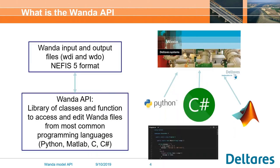What we have been doing is basically creating a Wanda API — an Application Programming Interface. That is a library of classes and functions which you can use to access and edit the Wanda files. We made it so that you can do it from most common programming languages, for example Python, MATLAB, or C-sharp. We also have a C interface, which enables going to other programming languages — you only need to make some kind of wrapper around it.